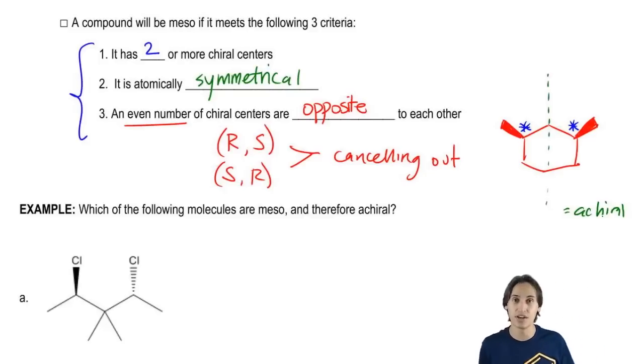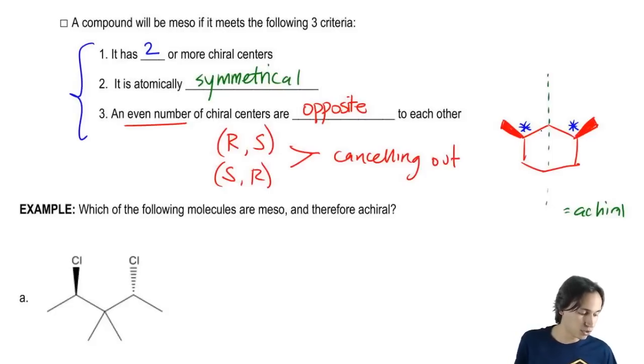But another way we could tell is by looking at the actual configurations of the chiral centers. What I would see is if I went ahead and figured out the chiral centers like the priority one, two, and three, what I would find out is that this one goes around this way and then I would find that this one goes around this way.